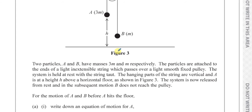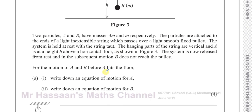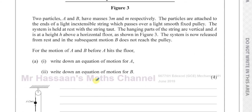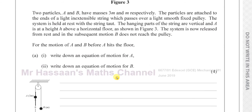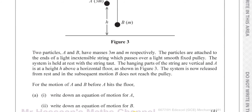For the motion of A and B before A hits the floor, write down an equation of motion for A and an equation of motion for B. When it says equation of motion, it doesn't mean one of the SUVAT equations — it means the equation formed by the resultant force.